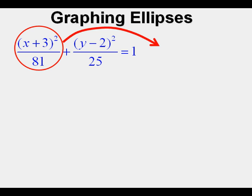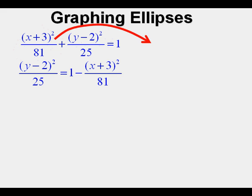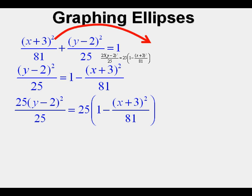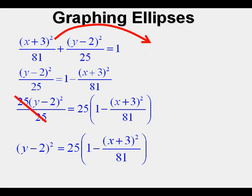We're going to graph by solving for y and putting values into a table. Our first step will be to take this (x + 3)² over 81 and move it over to the right side of the equal sign. And here on the other side, we have to subtract. Next, we need to multiply all the terms by 25 to work towards getting y by itself. The 25 over 25 cancels on the left side.